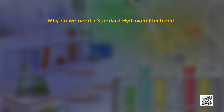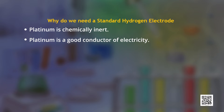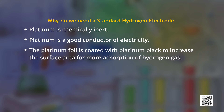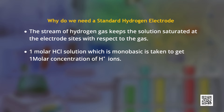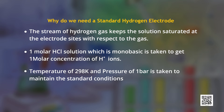Why do we need such a setup for establishing a reference electrode? It is because platinum is chemically inert and is a good conductor of electricity. The platinum foil is coated with platinum black to increase the surface area for more adsorption of hydrogen gas. The stream of hydrogen gas keeps the solution saturated at the electrode sites with respect to the gas. One molar hydrochloric acid solution is taken, which is monobasic in nature, to get one molar concentration of hydrogen ions. Temperature of 298 Kelvin and pressure of 1 atmosphere is taken to maintain the standard conditions.